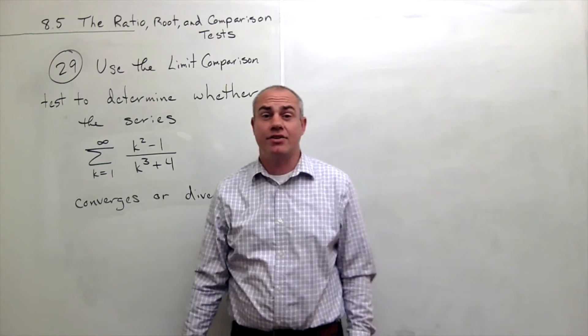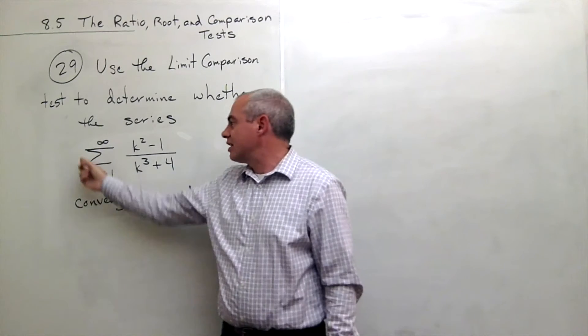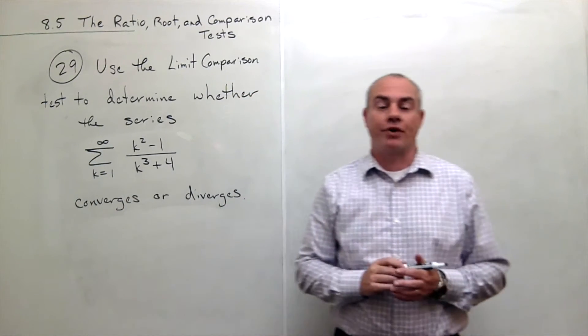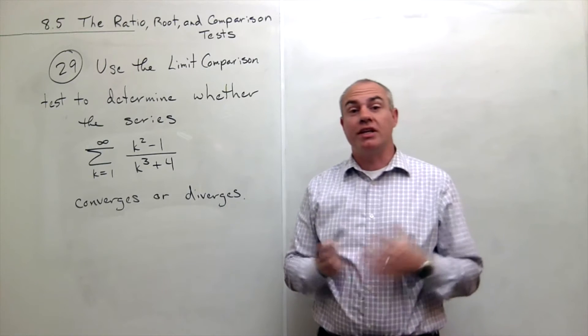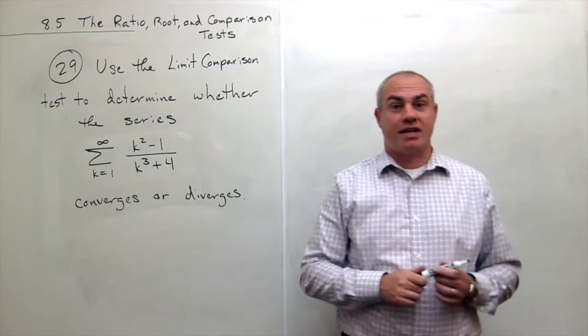And k squared over k cubed is just 1 over k. So what I'm imagining is that this series is kind of like the sum of 1 over k. Alright, but we need to actually verify that using a limit comparison test.